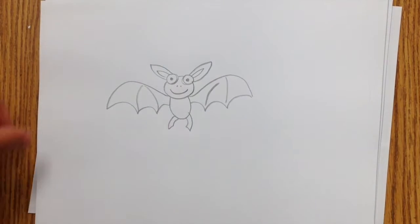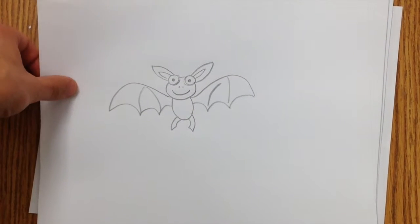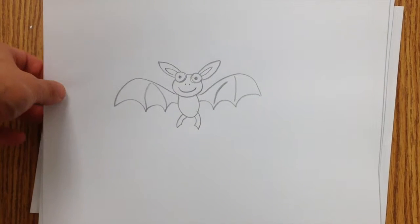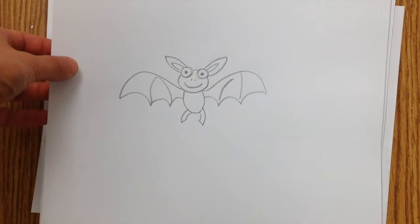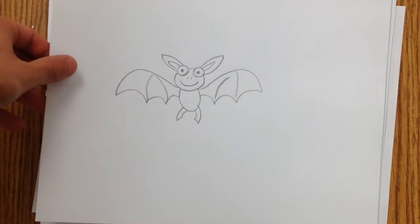Today we're going to draw this little bat. It's a nocturnal animal and a winged creature, but it's also a mammal because it has hair.